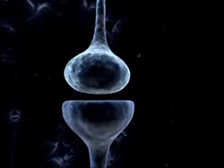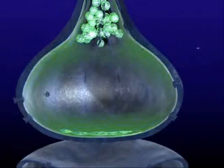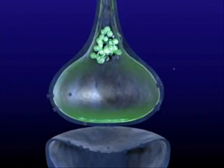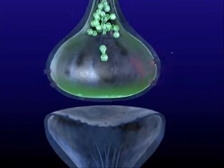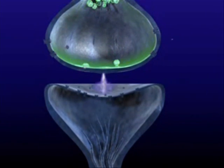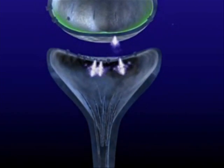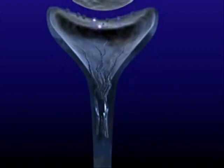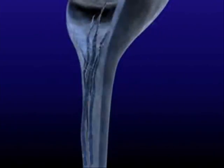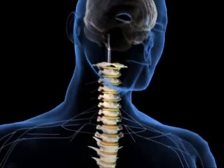Here we see an example of that signal being transmitted from one nerve to another. Now, this is an important area because this is one of the areas where some of our medications have an effect on pain and how pain is being perceived and transmitted.